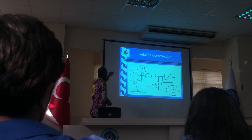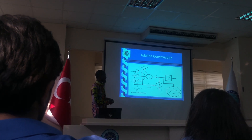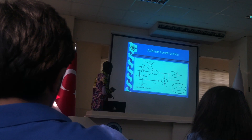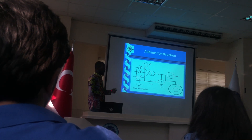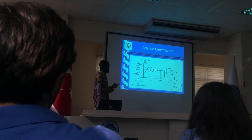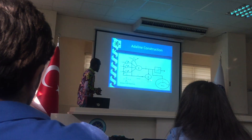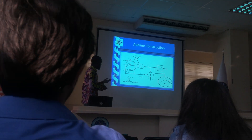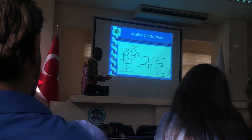Now, looking at the ADALINE architecture: we have N inputs, X1 to XN, and corresponding weights W1 to WN. We also have an extra input called bias, with value plus one. The actual output Y is the sum of the product of each input with its corresponding weight. The error is the difference between the desired output and the actual output. A sigmoid function allows us to have plus one or minus one at the output.